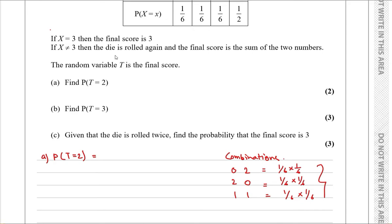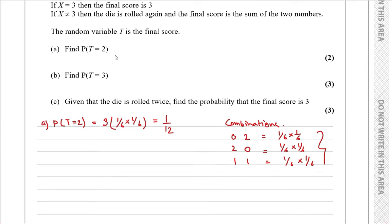We can write this as 3 multiplied by 1/6 times 1/6, because all three combinations have the same probability. This gives us 3 times 1/36, which equals 1/12.